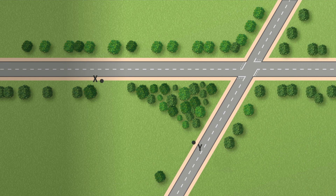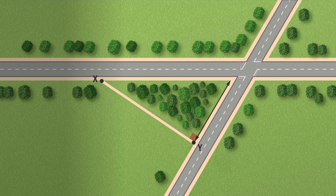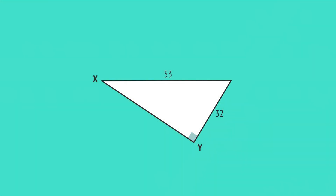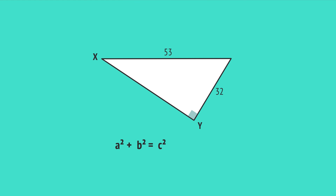In this road plan, a footpath will connect two roads between points x and y. The footpath makes a 90-degree angle with the road at point y, which is 32 metres from the intersection. Point x is 53 metres from the intersection. How do we calculate the length x y of the footpath? Drawing a right-angled triangle with the information given, we can use Pythagoras to calculate x y, one of the shorter sides.